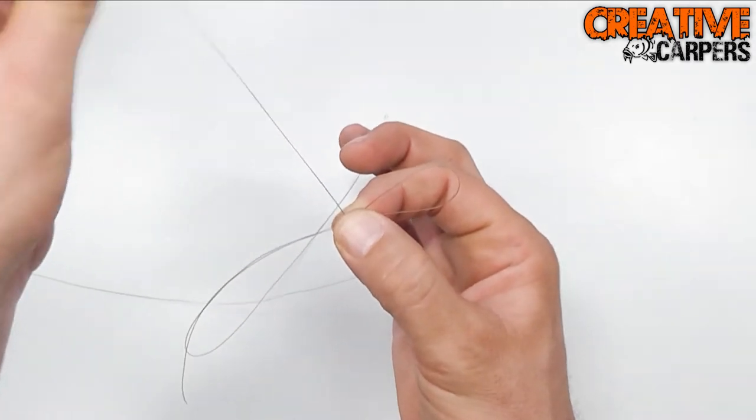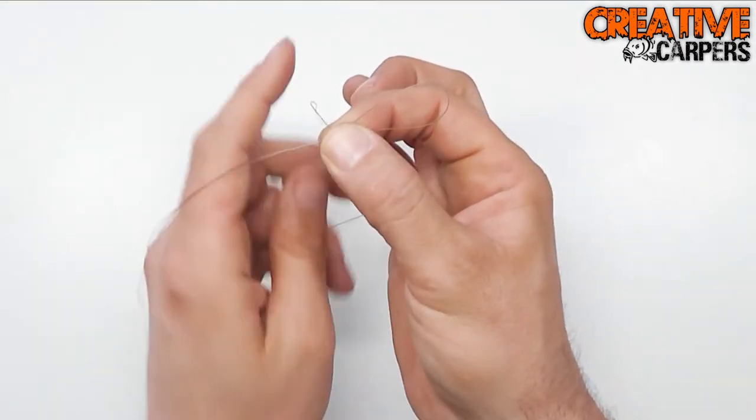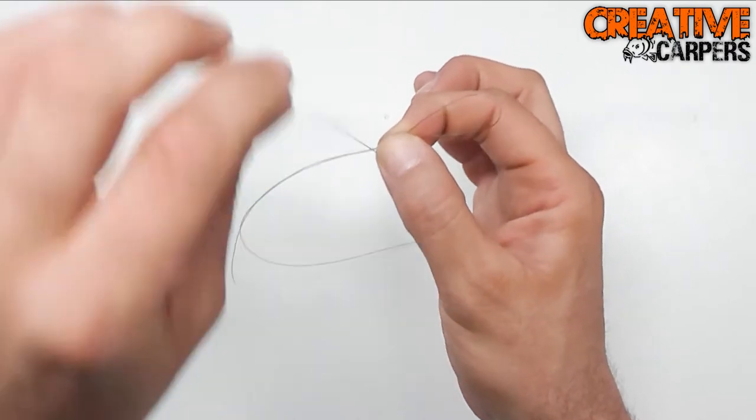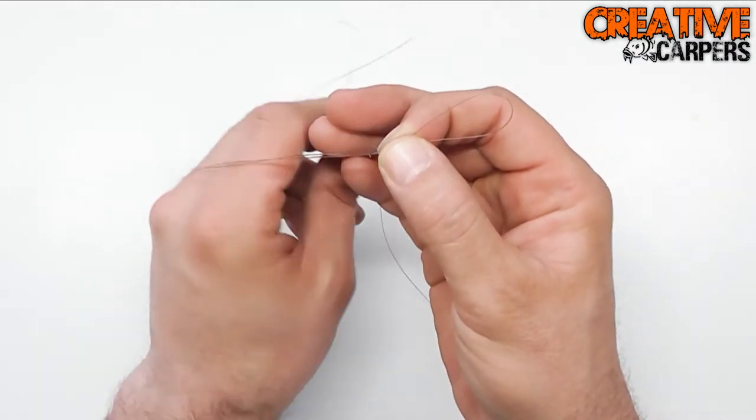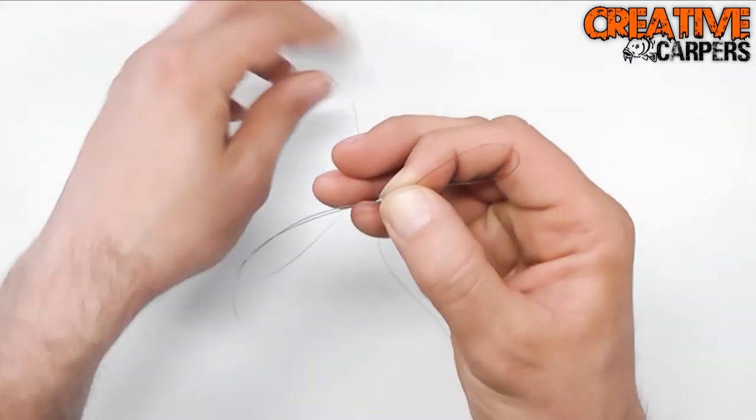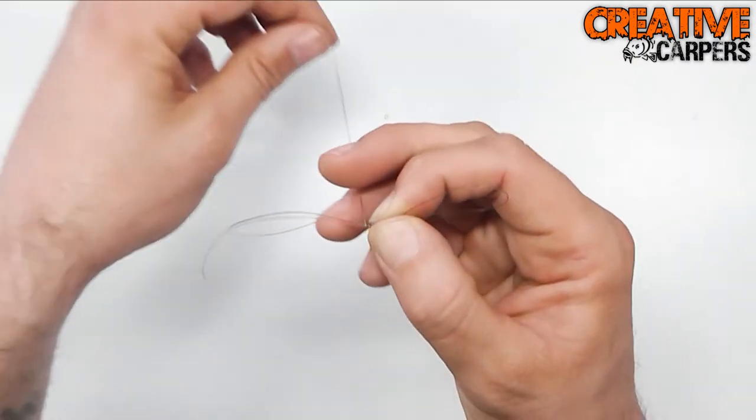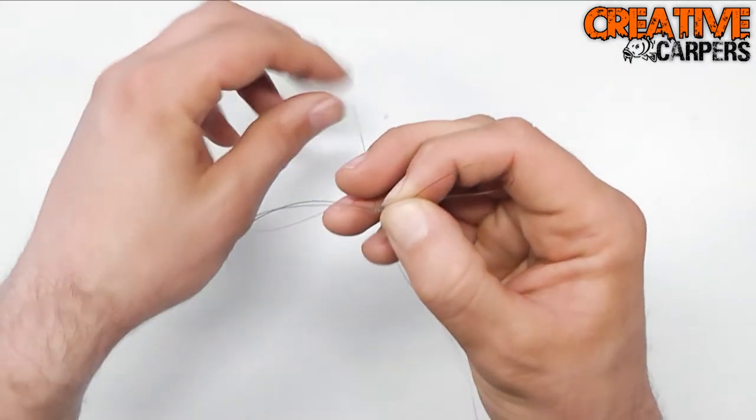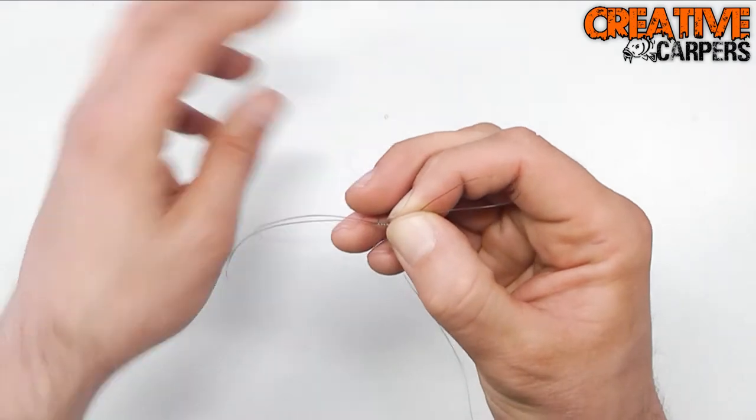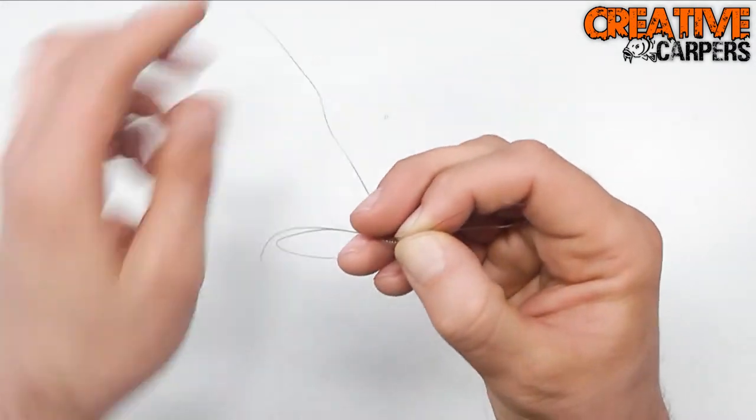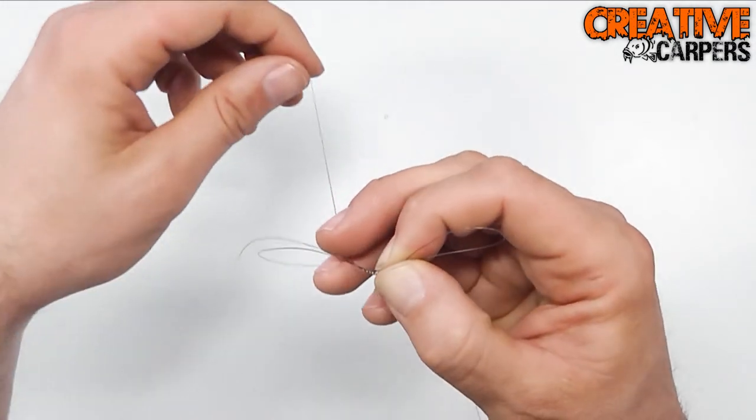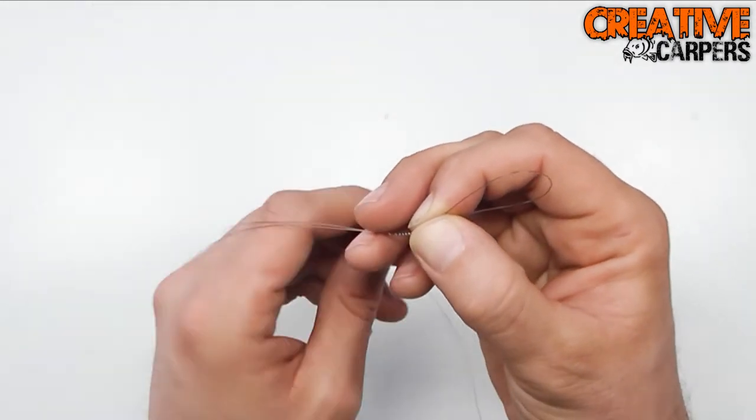Pull yourself off enough tag end to work with, and proceed to go round the two bits of mono there eight times, and you want to go round clockwise. So that's three, four, five, six, seven, eight.